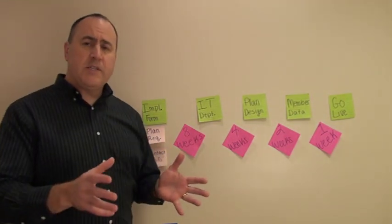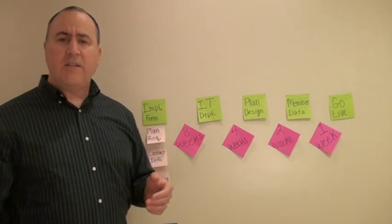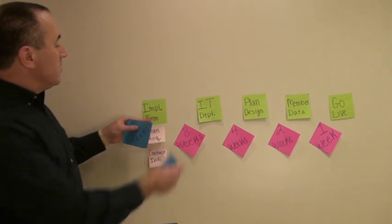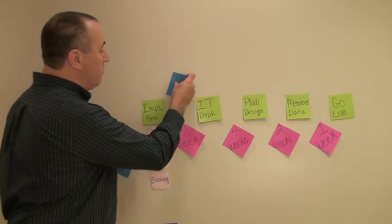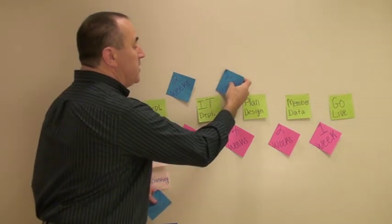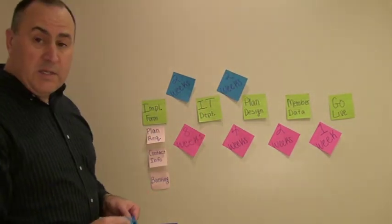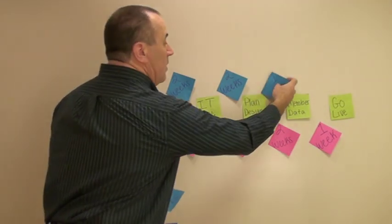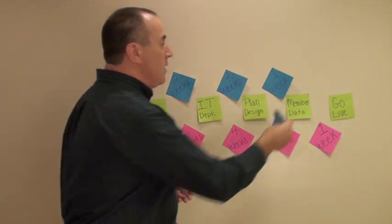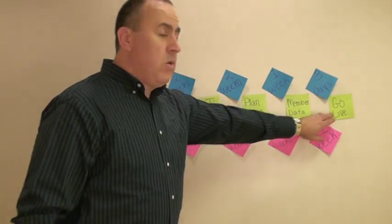I said, does the process ever go a lot faster? Does it go well sometimes? He goes, yeah, it does. I said, how long does it take on these steps when it does that? And he goes, it takes about two weeks to get the implementation form to the IT department. It takes the IT department about two weeks to do the plan design. It takes about one week for them to load the member data and to test it.